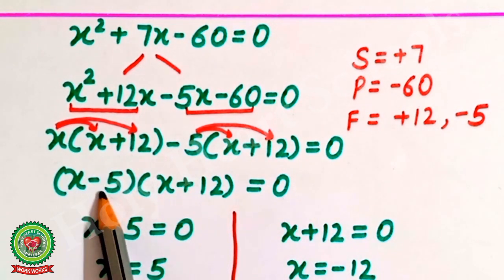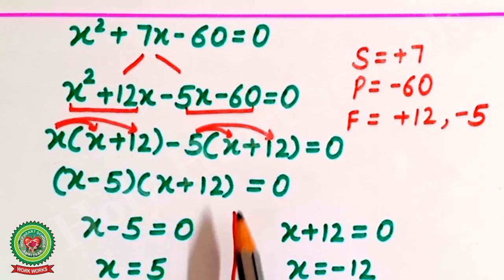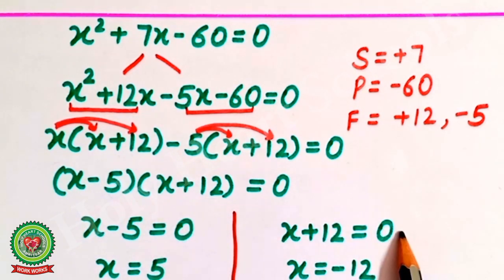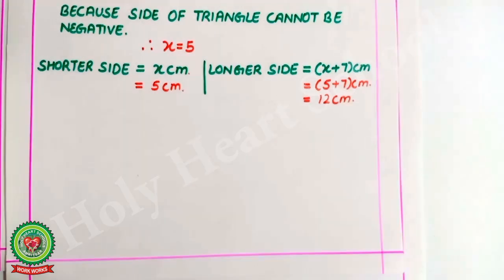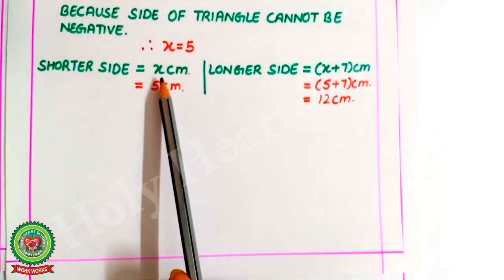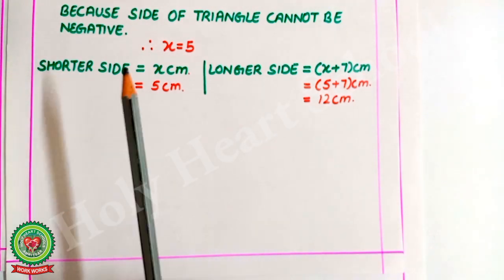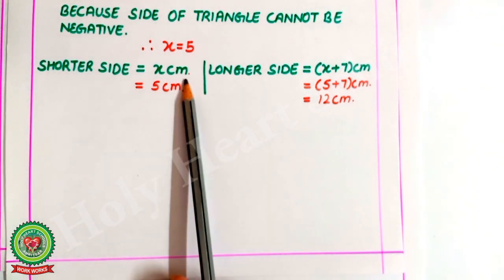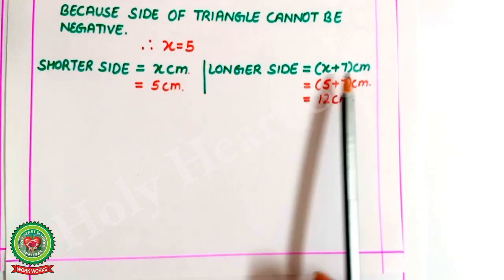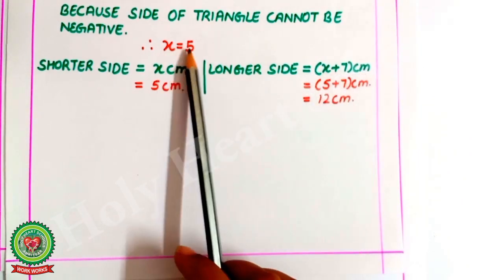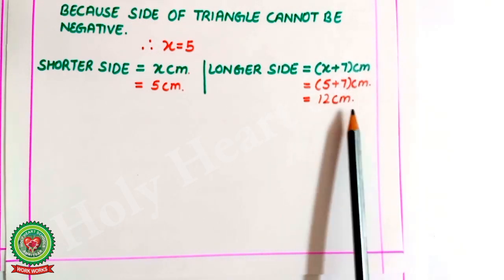Either x minus 5 equals 0 or x plus 12 equals 0, giving x equals 5 or x equals minus 12. Minus 12 is rejected because the length of a side cannot be negative. Therefore the shorter side is x equals 5 centimetres and the longer side is x plus 7 equals 5 plus 7 equals 12 centimetres.